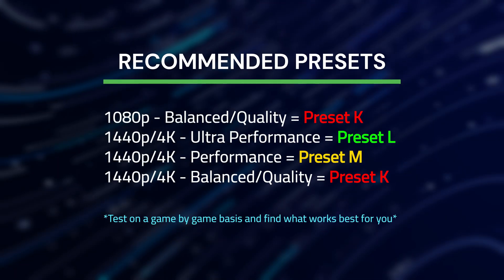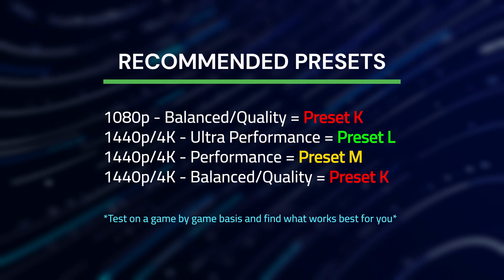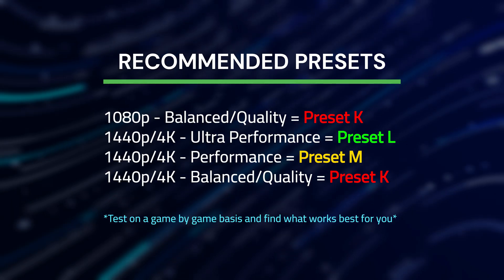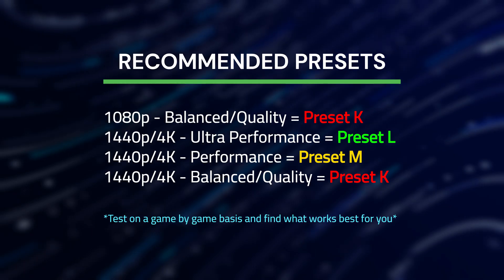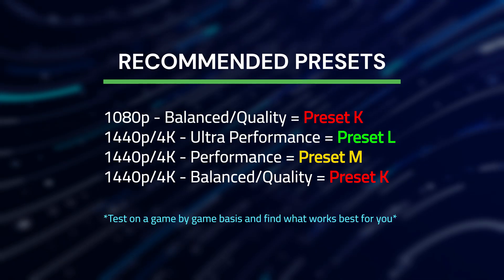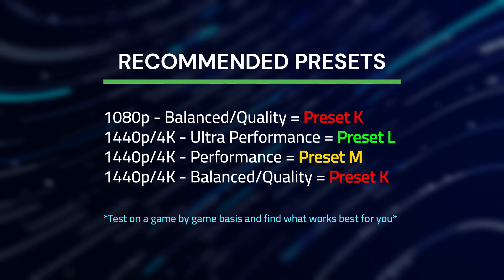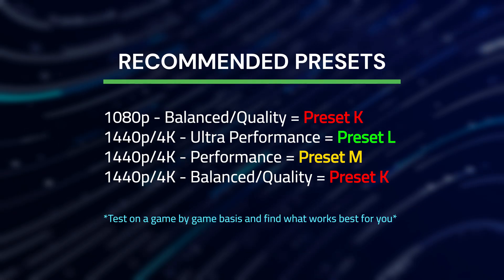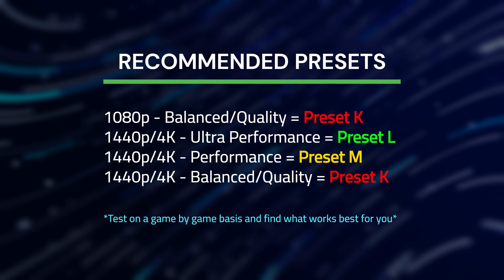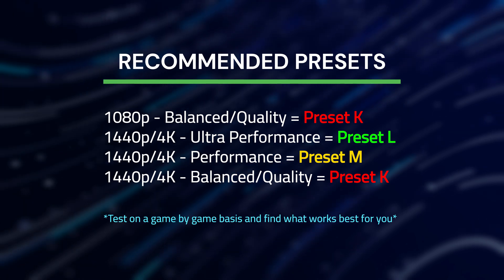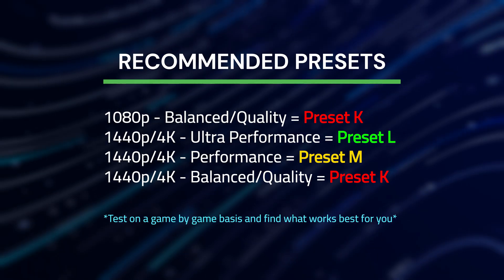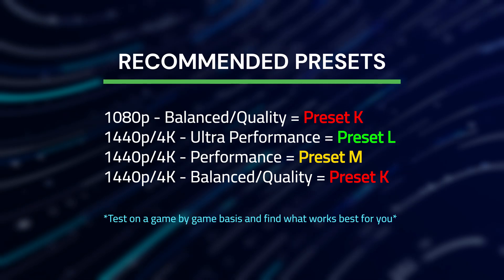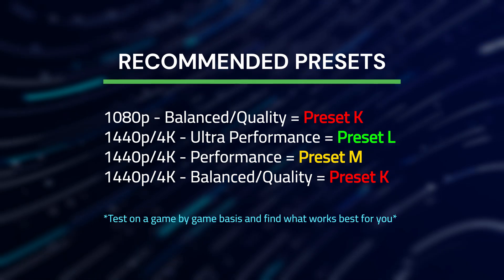Here are my recommended presets for various resolutions. For 1080p, use preset K for balanced or quality — going lower than balanced at 1080p will look really blurry. For 1440p and 4K ultra performance, I recommend DLSS 4.5 preset L, which looked great at 1440p and will look even better at 4K. For 1440p and 4K performance, use preset M — it looked comparable to native 1440p at 1440p, so at 4K it's going to look really good. For 1440p balanced and quality, use preset K, since there's a performance cost to going above performance for preset M, and preset K still does a great job at balanced or quality for the best image quality to performance ratio.